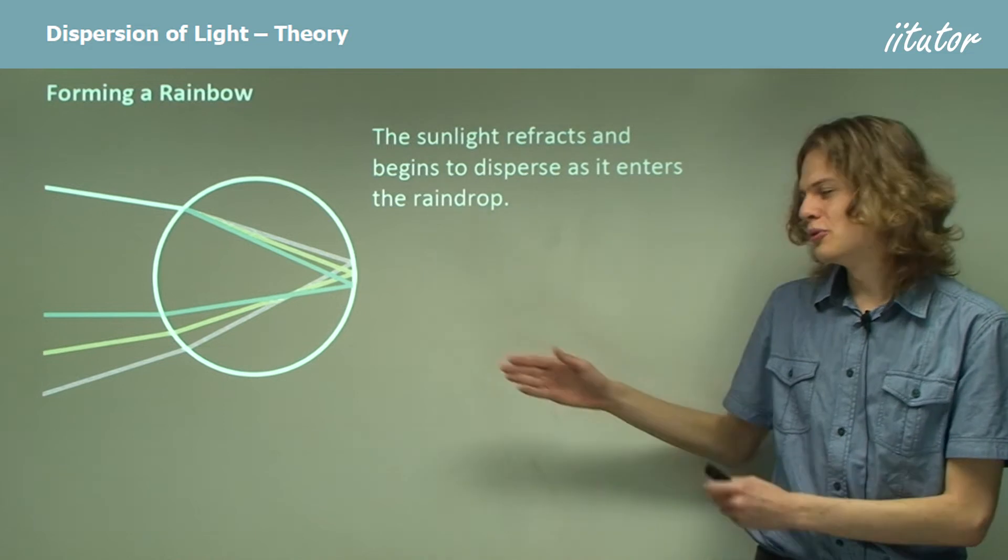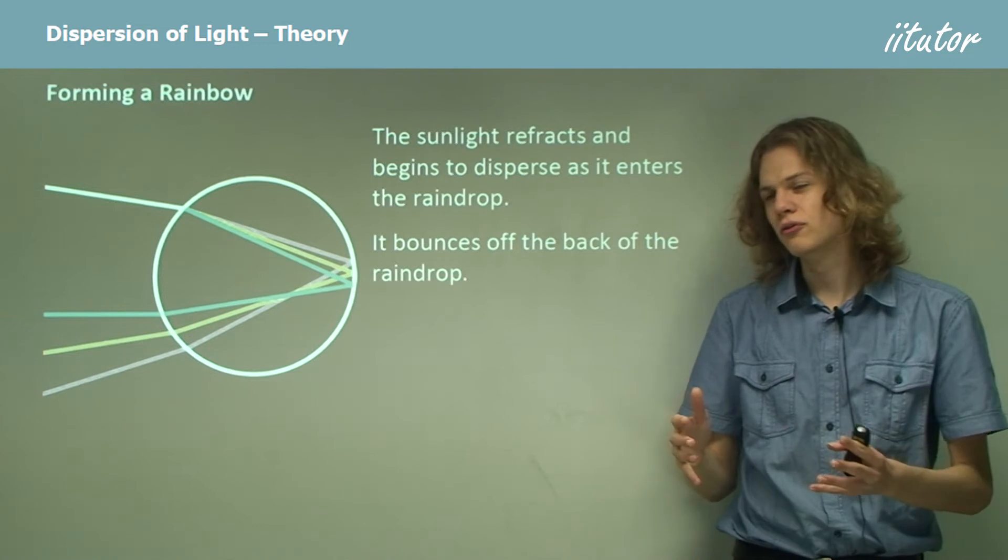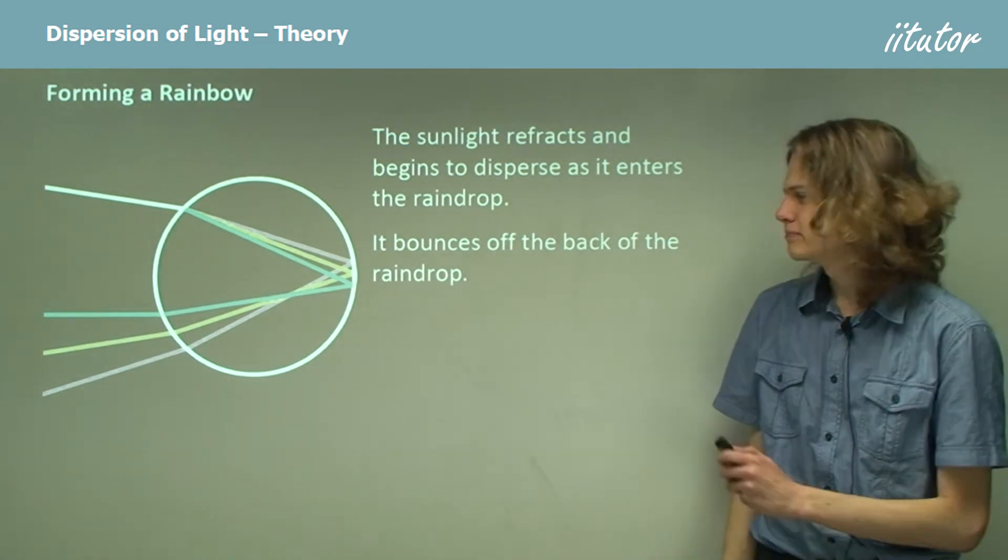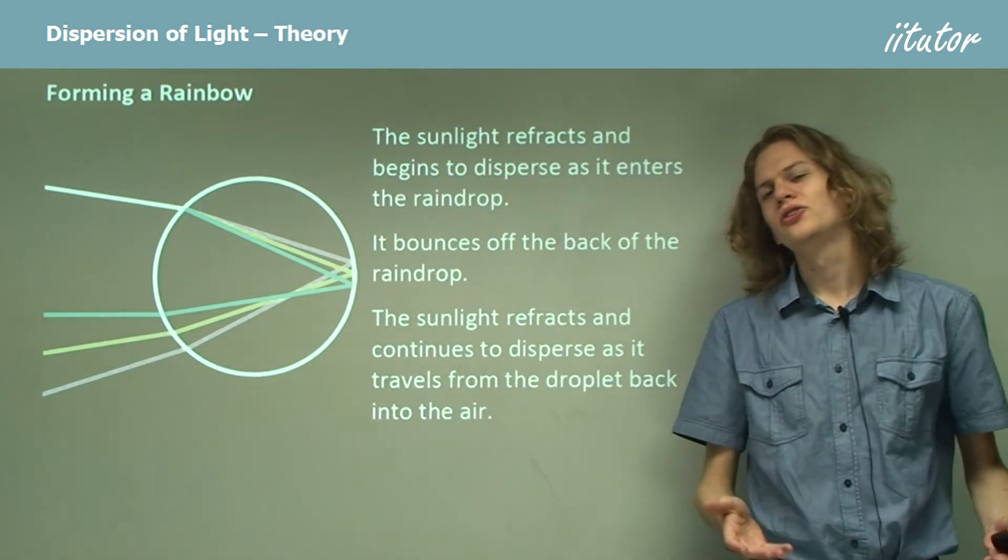So what happens when it reaches the opposite side of the raindrop? It bounces back. We can see that they'll cross over in the middle of the raindrop before reaching the opposite side and then coming out. So the sunlight will refract as it exits the raindrop and then continue to disperse.